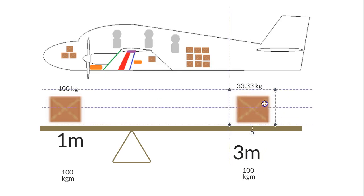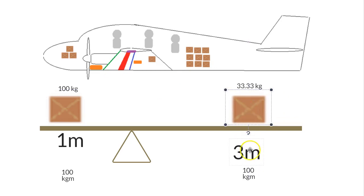Likewise, if we increased that to 100 kilos, that would now be 100 kilos times three meters would be 300 kilogram meters, and that would be very, very tail heavy. So you can see by either changing where the item is located or the size of it, we can get things to balance out.